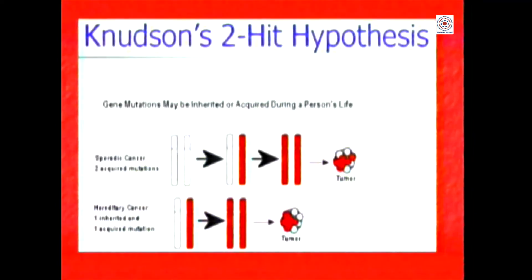Having a mutation in one gene predisposes you to get more mutations, and therefore environmental factors will result in more and more mutations in the somatic cell. It was Knudson who proposed the two-hit hypothesis — if you do not have any mutation you need at least two events, but if you already have a mutation then only one additional event is sufficient to convert a cell into a cancerous cell.